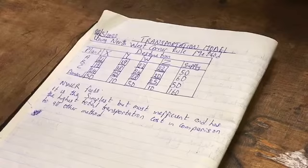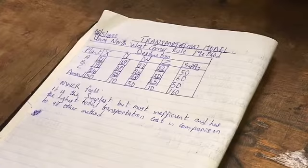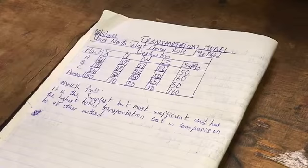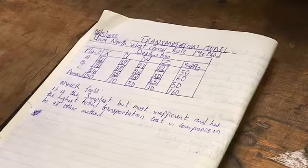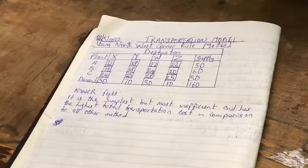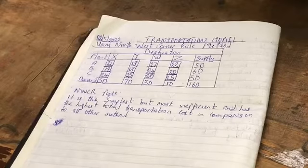Step 2: If the allocation made in the first step is equal to the supply or demand available at the first row or column, then cross out the exhausted row or column so that no further assignments can be made to that row or column. Move vertically or horizontally to the next step and apply step 1.